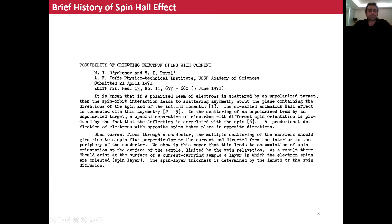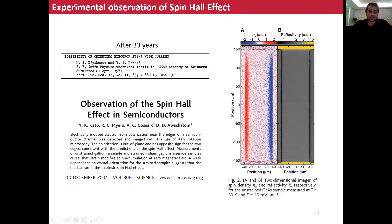The spin hole effect was predicted for the first time by Dyakonov and Perel in 1971, with the title 'Possibility of orienting electron spins with current.' This was a theoretical prediction with no experiment. After 33 years, Kato et al. experimentally observed the spin hole effect in a semiconductor device. They used a gallium arsenide sample, applied current through the material, and observed spin polarization at the edges using Kerr rotation microscopy. This was a very beautiful experimental confirmation of the spin hole effect.